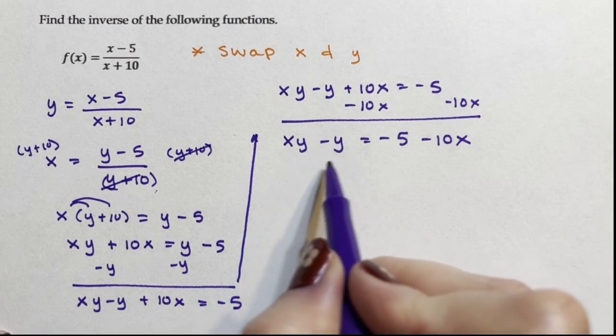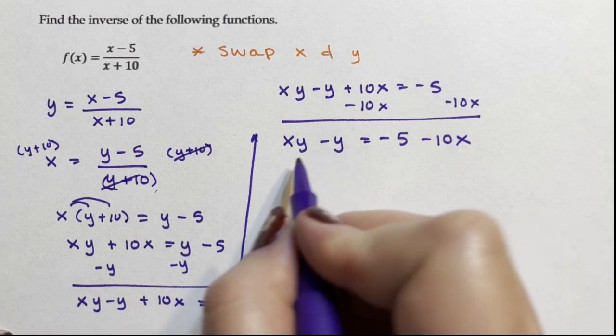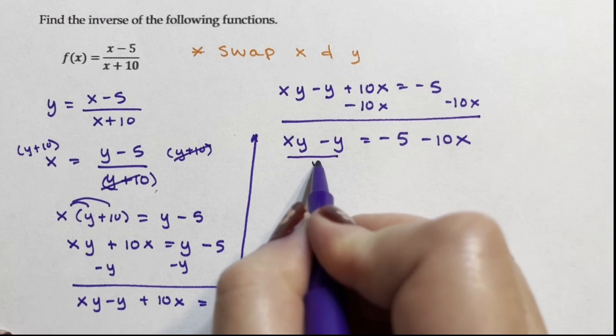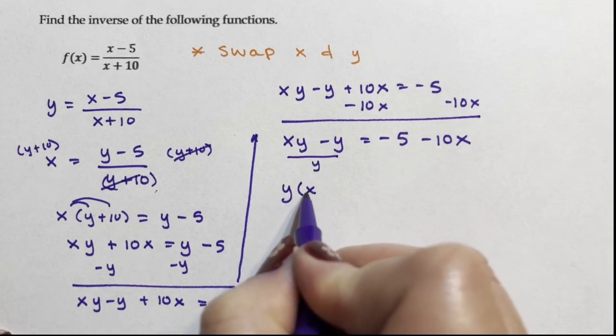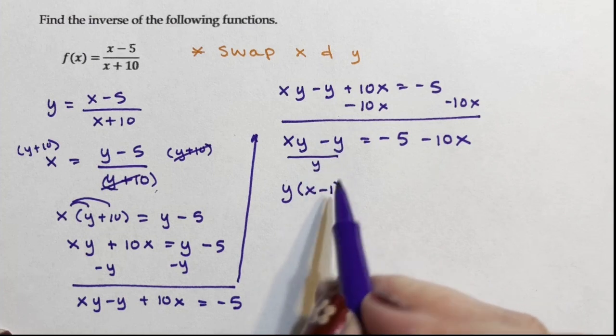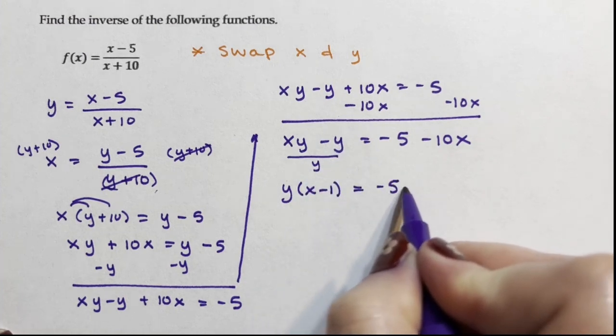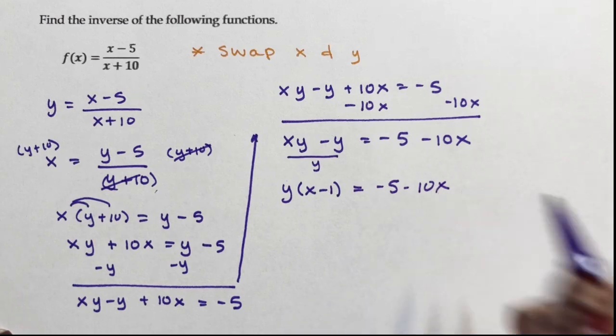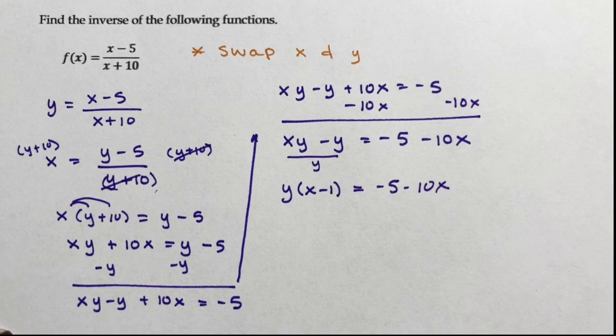Now I need to isolate my y. So I'm going to factor out a y. So essentially, I'm dividing a y out of those two terms. So I have x minus 1. Remember, when you factor, you can't eliminate a term. So there's still a 1 there. Negative 5 minus 10x. I don't need to factor out a 5. This is not about factoring. It's about getting y alone.